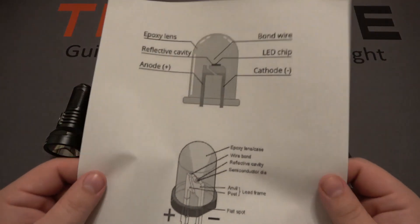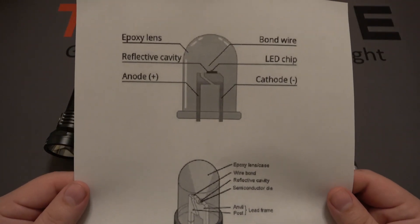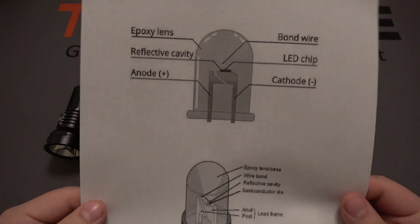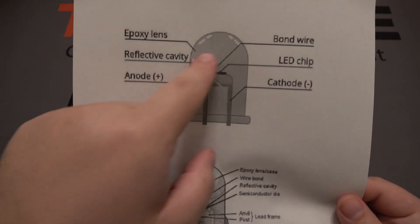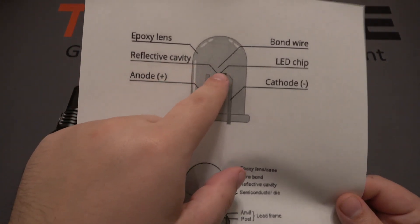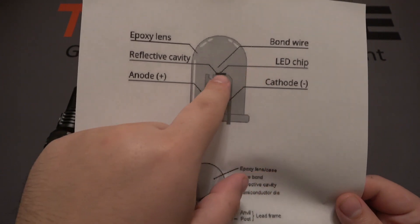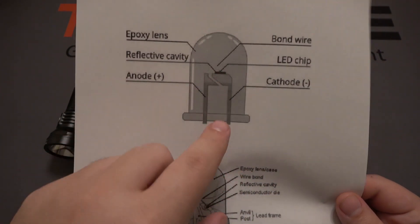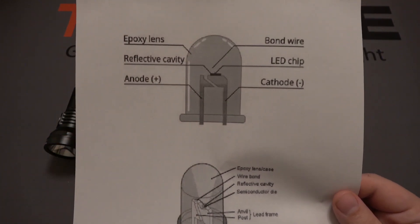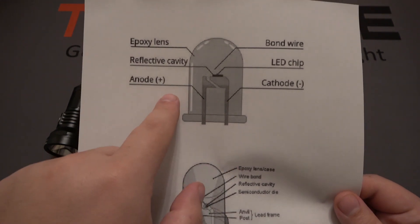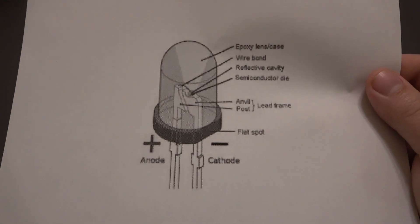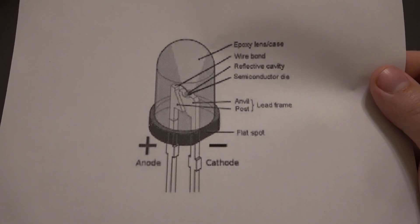I printed a quick diagram to show these up close, because the camera zoom can't get close enough to really see how it's broken down. At the top is an epoxy lens, then a reflective cavity — like a little cup. Then the LED chip and a bond wire. On both sides are posts that come down; one is the positive, called the anode, and the negative is called the cathode. Here's another diagram showing that in a 3D picture.